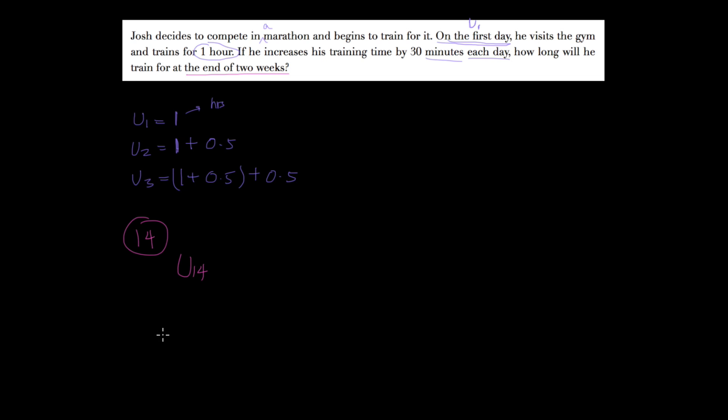Now let's go back and refresh our memory about the formula. It's u sub n equals u sub 1 plus n minus 1 times d. Right?